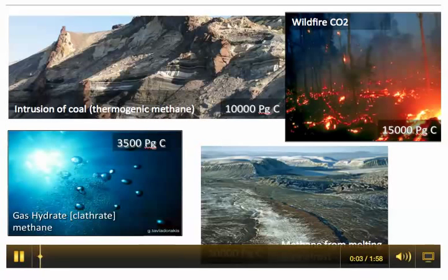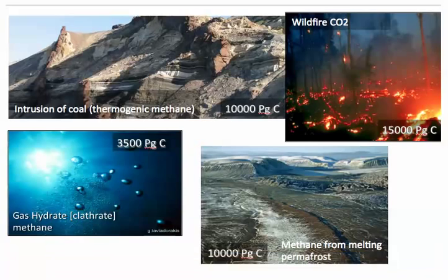Understanding the ultimate cause of the Paleocene-Eocene Thermal Maximum represents an unresolved problem. The mechanism must explain the large input of greenhouse gas that contributed to the warming, as well as the significant negative carbon isotope excursion. Currently, there are four candidates.